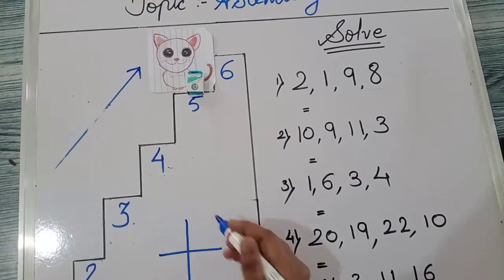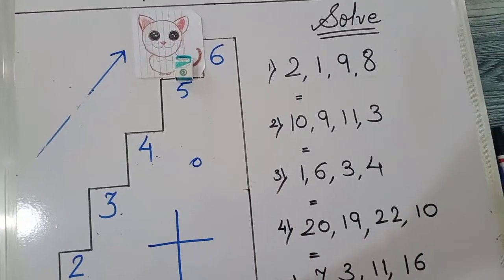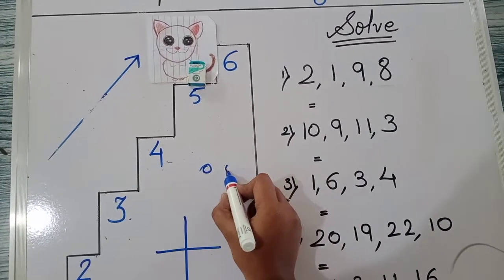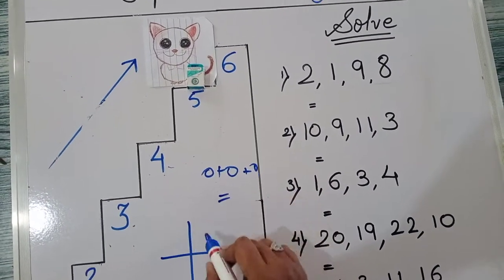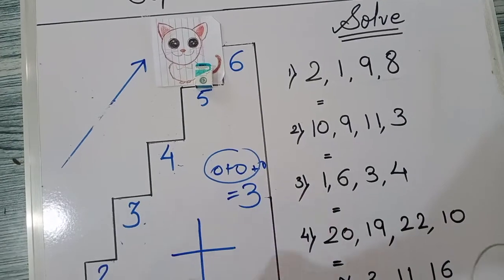Suppose, mere paas ek chocolate hai. After that, mene ek or chocolate le li hai. Then, mene ek or chocolate le li hai. Total, kitni chocolates ho ghi mere paas? 3 chocolates.